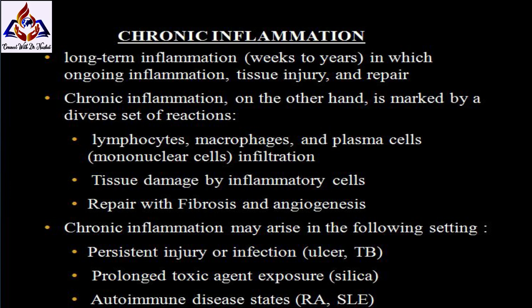Chronic inflammation is marked by a diverse set of reactions: infiltration by lymphocytes, macrophages, and plasma cells (mononuclear cells); tissue damage by inflammatory cells; and repair with fibrosis and angiogenesis (new vessel formation). Chronic inflammation may arise in the setting of persistent injury or infection such as ulcers or tuberculosis, or prolonged toxic agent exposure.